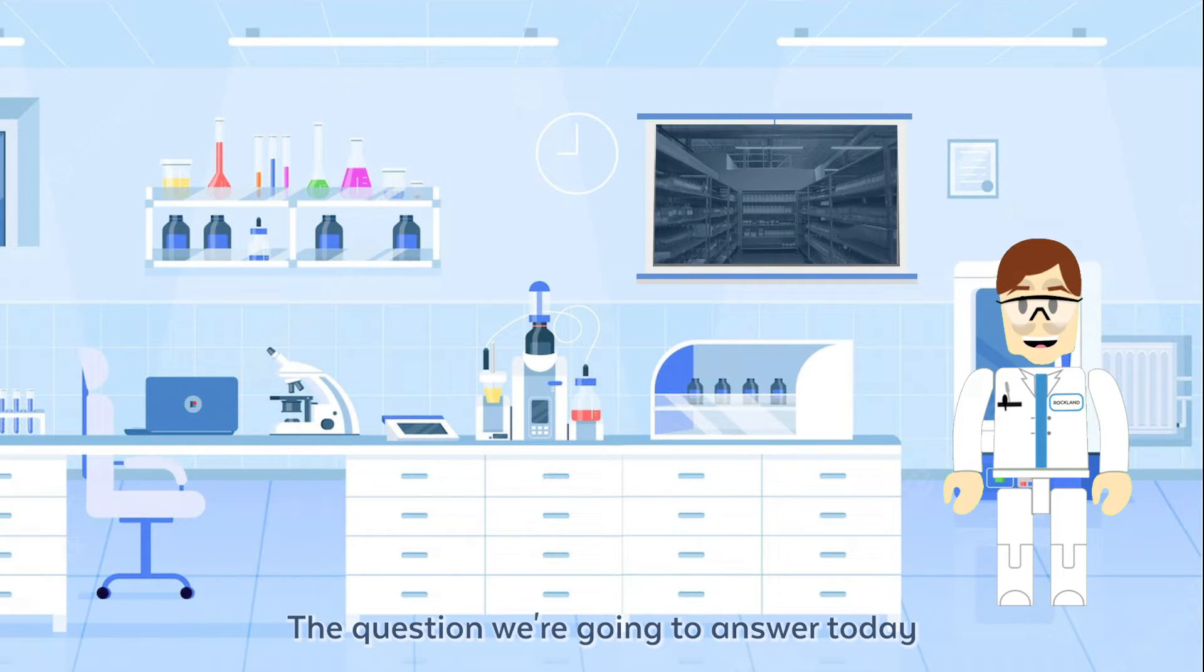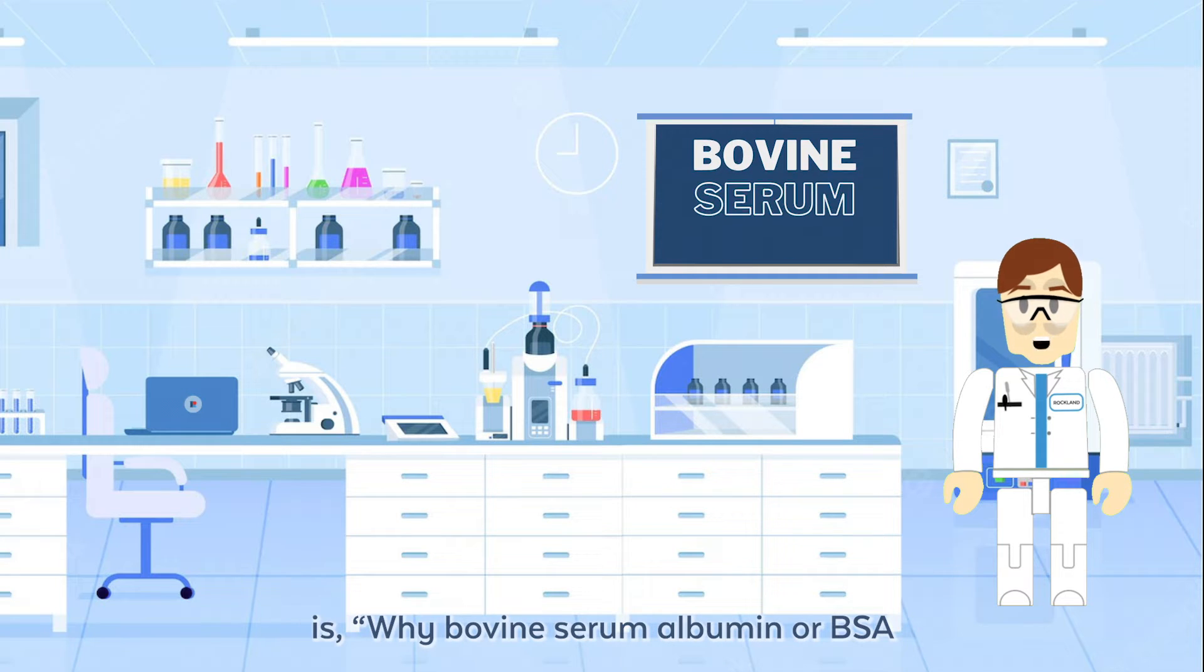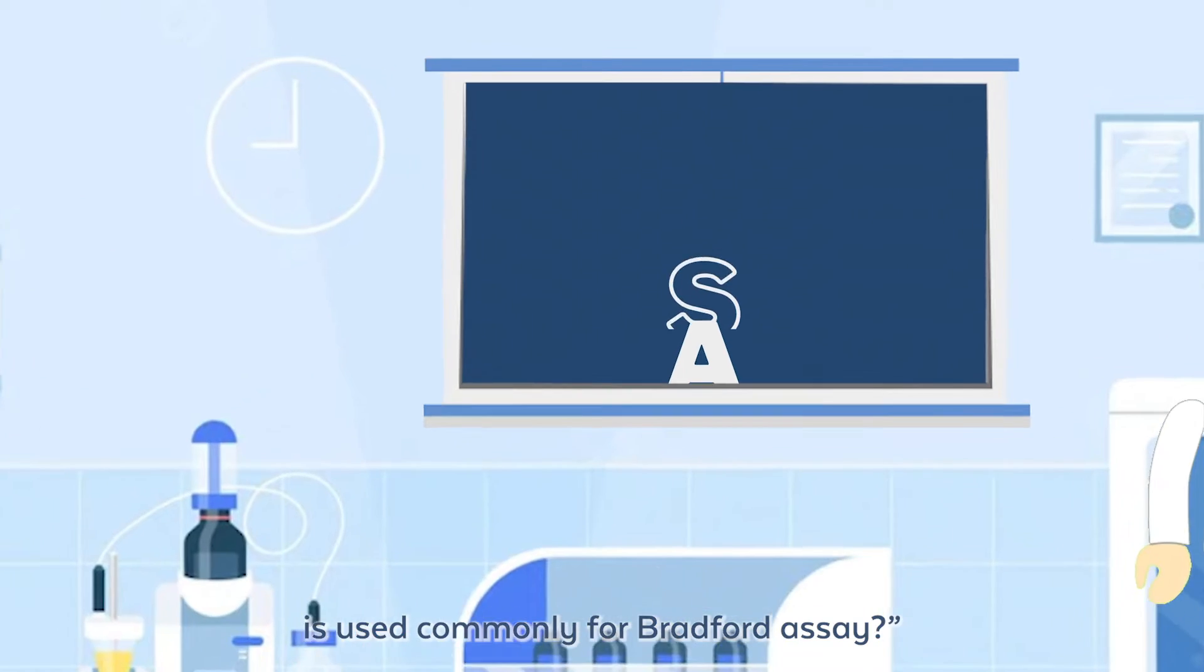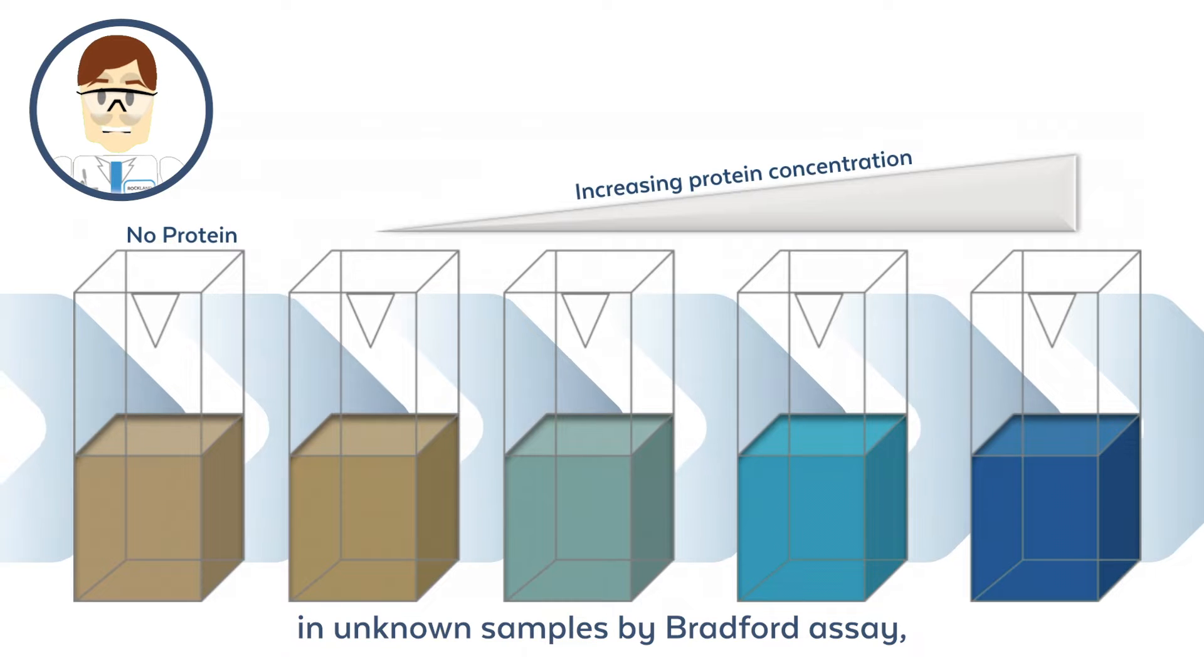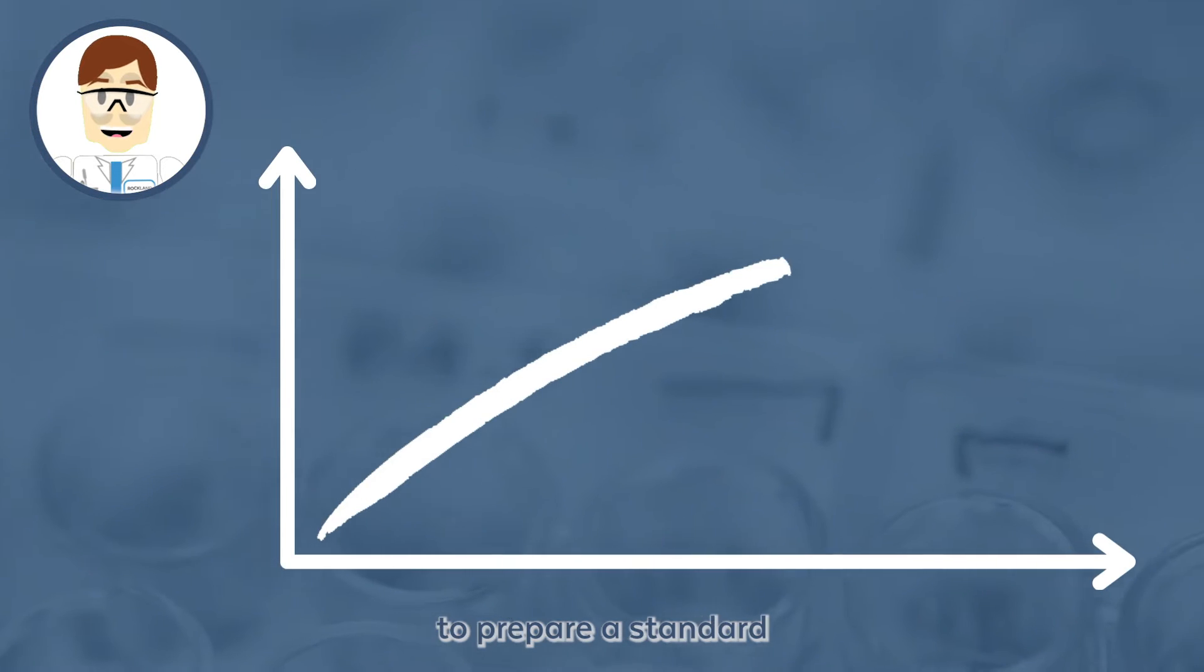The question we're going to answer today is why bovine serum albumin or BSA is used commonly for Bradford assay. For the determination of protein concentration in unknown samples by Bradford assay, it is important to prepare a standard curve for each assay.